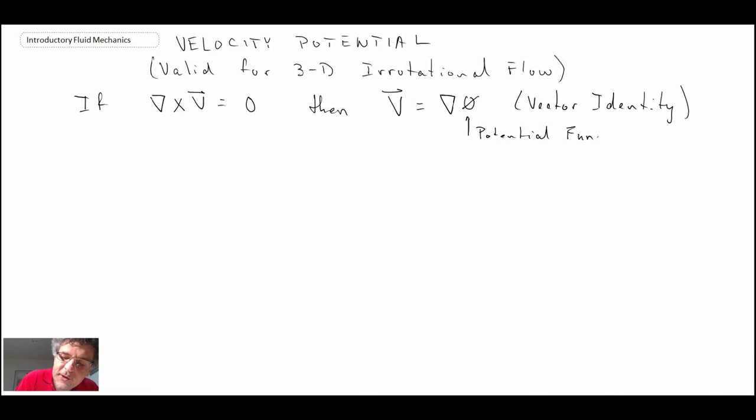We saw the stream function earlier. Now we're going to look at this potential function. It's another function that is a function, in this case, of the three spatial coordinates. And we can also have it as a function of time. And this is known as the velocity potential function.